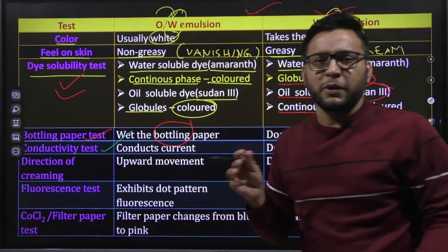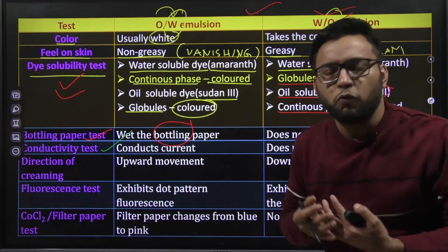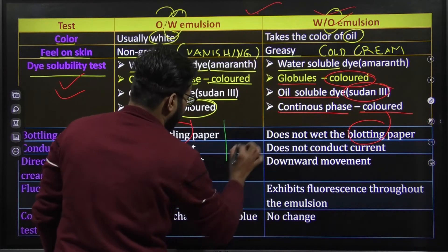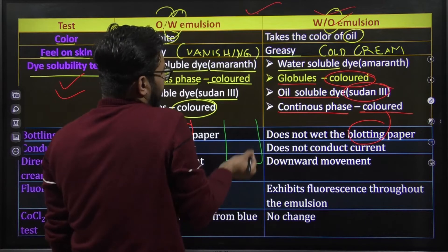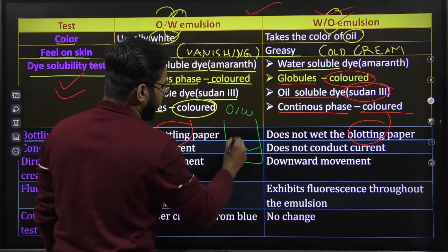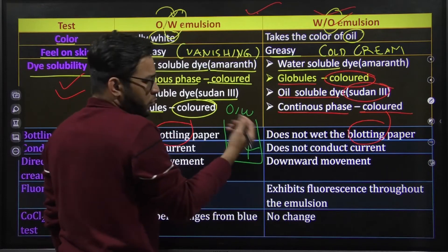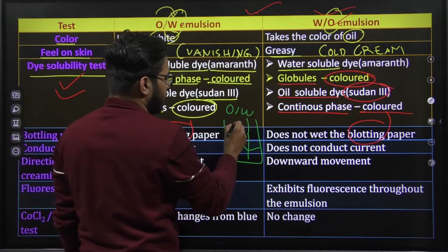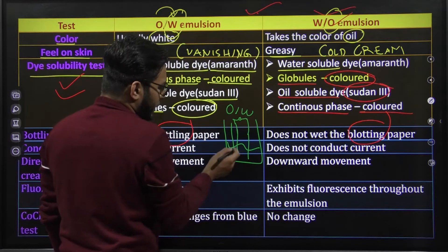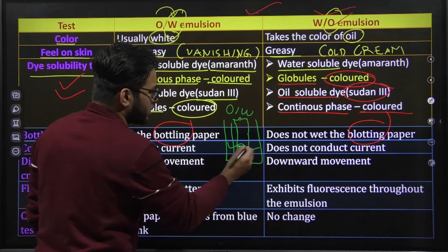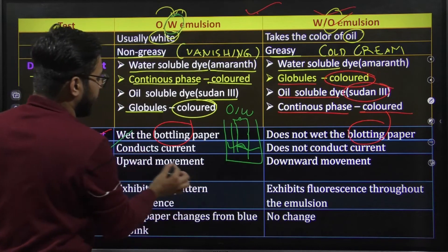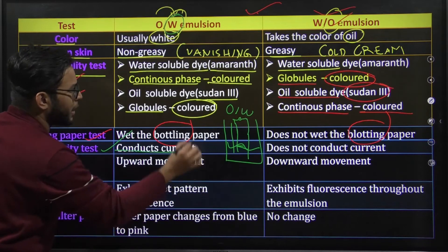Next है conductivity test. Water is a good conductor of electricity. एक beaker में oil in water emulsion लो, दो electrodes डालो और current pass करो — bulb connect किया तो वो conduct करेगा क्योंकि water continuous phase में है और ज्यादा quantity में है. Oil in water conducts the current.